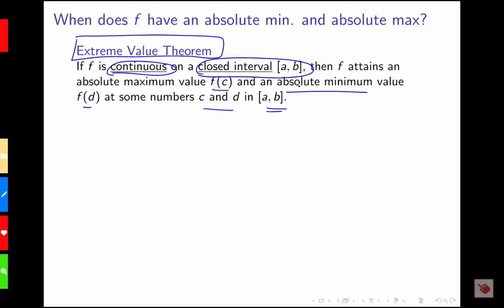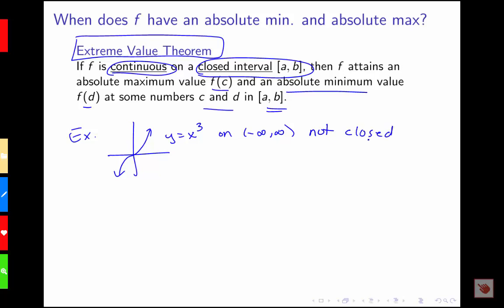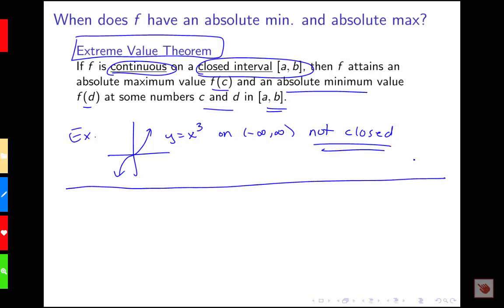We need both of these conditions. When we had the example with y equals x cubed, this was on the interval from negative infinity to infinity, which is not closed. So although this was a continuous function, it wasn't over a closed interval, and so the theorem says it would not necessarily have an absolute min and max — which is exactly what we found.